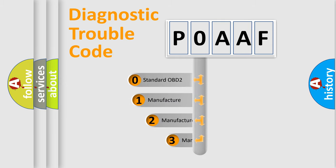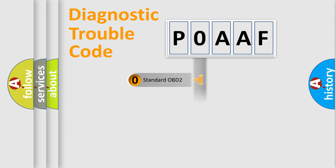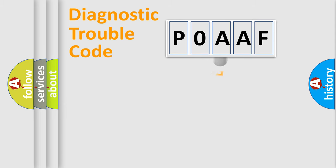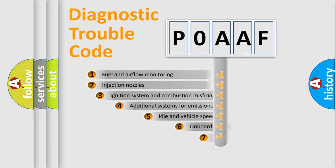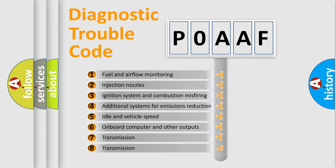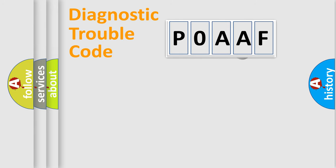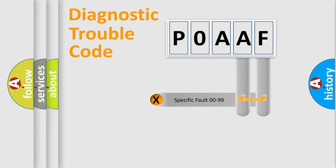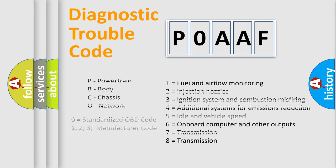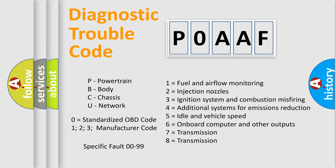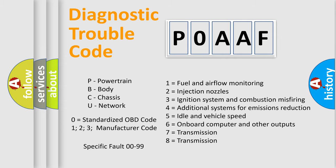If the second character is expressed as zero, it is a standardized error. In the case of numbers 1, 2, or 3, it is a more specific expression of a car-specific error. The third character specifies a subset of errors. This distribution is valid only for the standardized DTC code, and only the last two characters define the specific fault of the group.